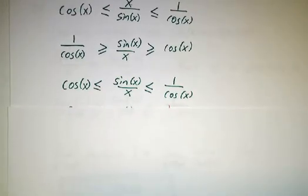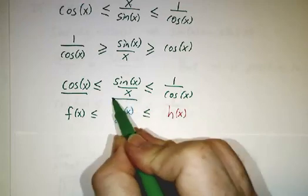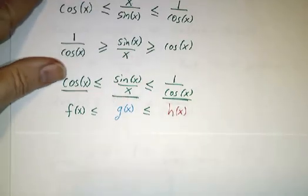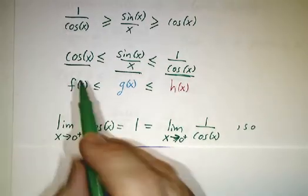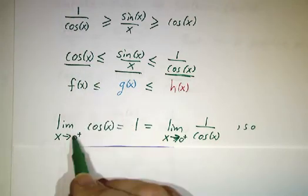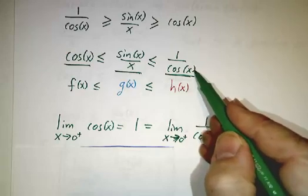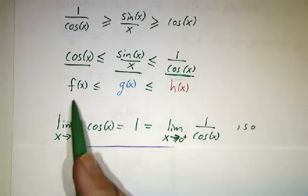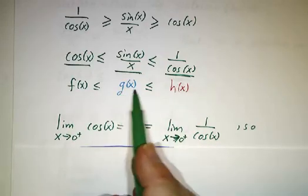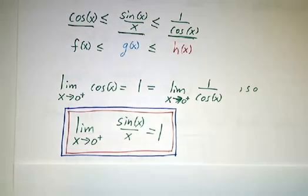Now we can apply the squeeze theorem. cos(x) is our function f, sin(x)/x is our function g, and 1/cos(x) is our function h. As x approaches 0, cos(x) approaches cos(0) which is 1, and 1/cos(x) approaches 1/cos(0) which is 1/1 = 1. So f goes to 1 and h goes to 1. g is stuck in the middle, so g also has to go to 1. So our limit is 1.